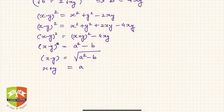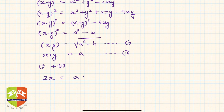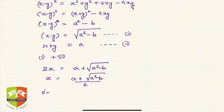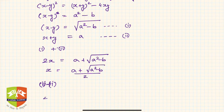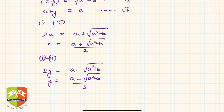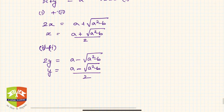We now have two equations: equation (1): x + y = a, and equation (2): x − y = √(a² − b). Adding (1) and (2): 2x = a + √(a² − b), so x = [a + √(a² − b)] / 2. Subtracting (1) from (2): 2y = a − √(a² − b), so y = [a − √(a² − b)] / 2. We have now found x and y.